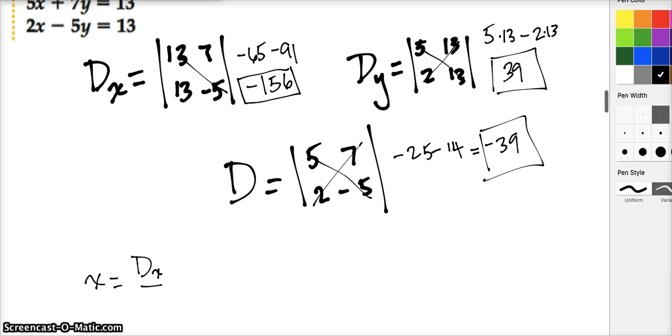We're going to go down, multiply, get negative 25, then up multiply to get positive 14. Actually, negative 25 minus 14 gives negative 39. Now x is dx over the general d denominator, and y is dy over d. Negative 156 over negative 39 and 39 over negative 39. That's just negative 1. And negative 156 divided by negative 39—dividing 13 into both gives negative 12 over negative 3, which is 4. So that's my answer.